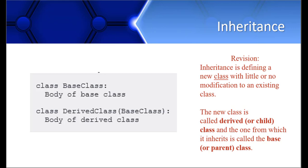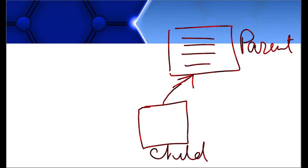Let's start with inheritance. We covered what a class is in last week's video. Today, we will see what inheritance is. You must be familiar with the inheritance concept from your object-oriented course. For a quick revision: inheritance is defining a new class with little or no modification to an existing class. We can create another class and derive it from a parent class. This new class will be called the child class, or derived class, while the original is the base class or parent class.